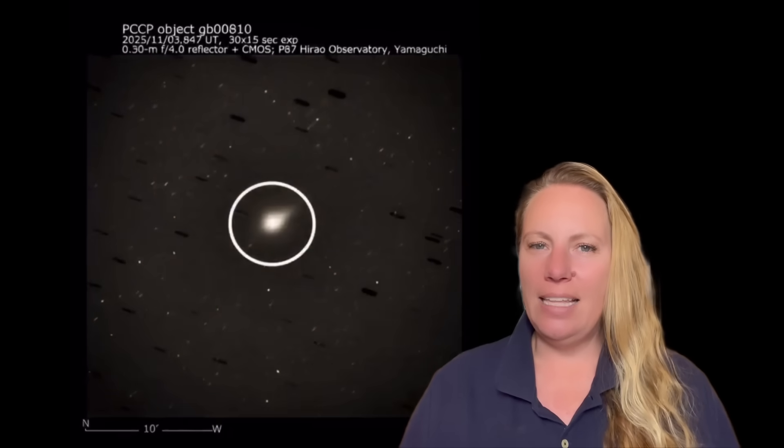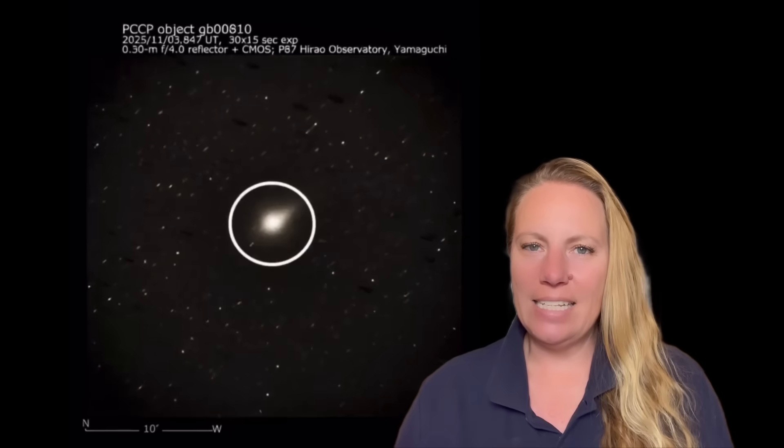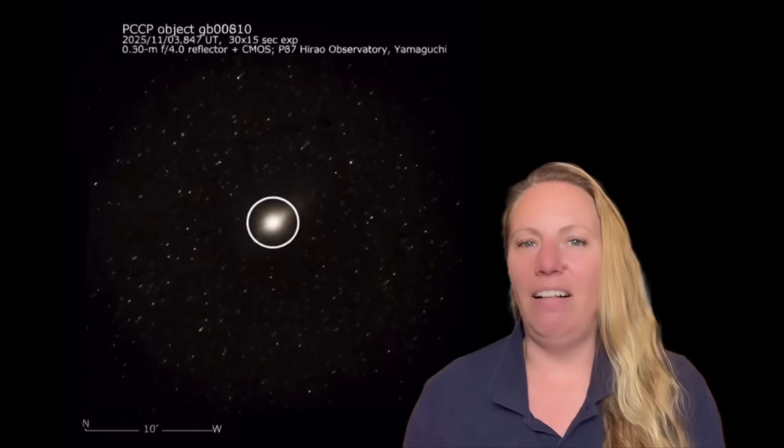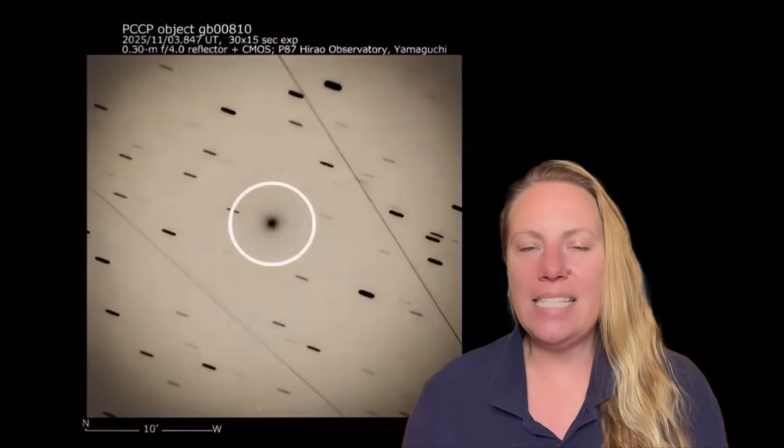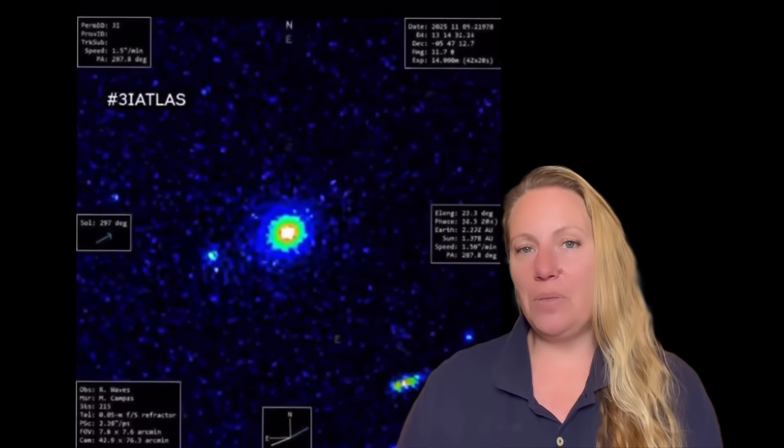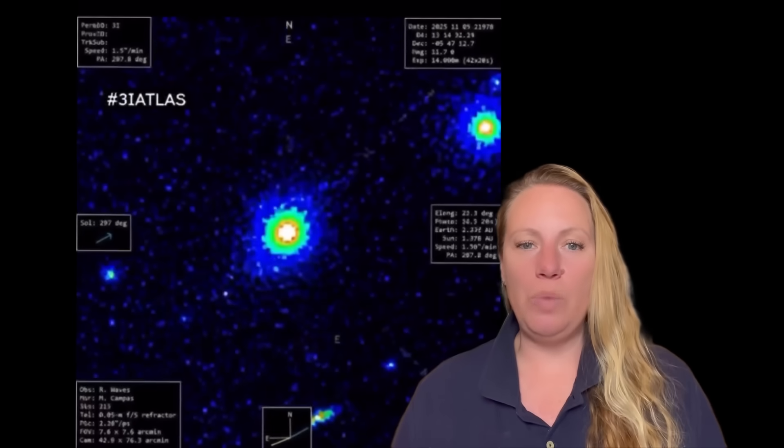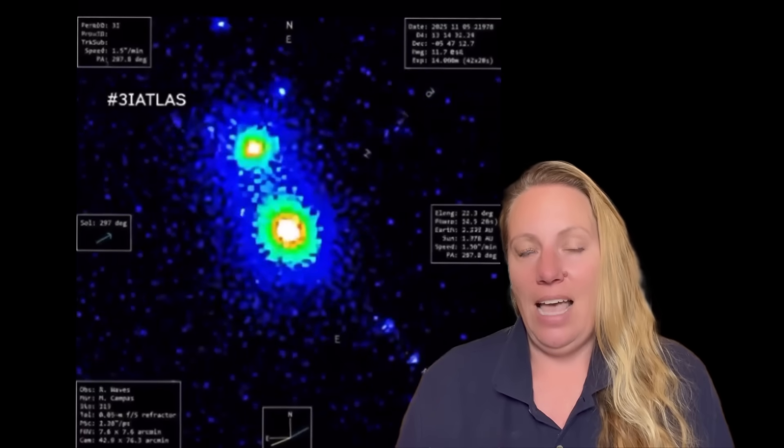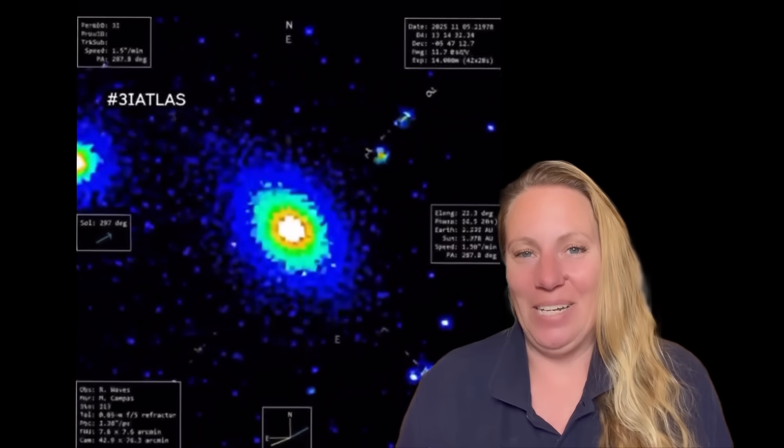Because like 3i/ATLAS, it doesn't have this tail that usual comets have. This tell-tale tail. And according to the expert, this thing is zooming between us and something that other scientists have warned could be an alien mothership.